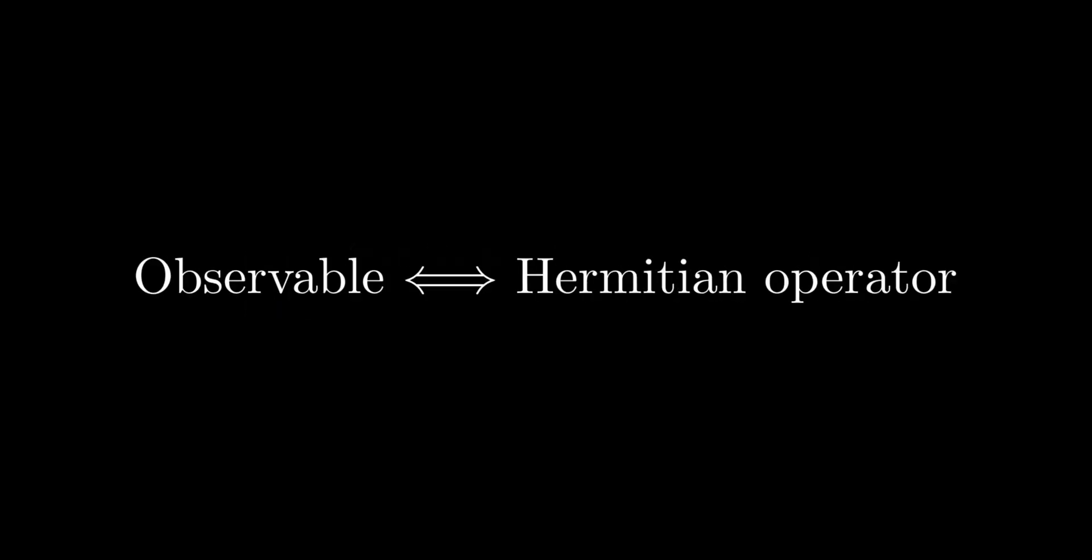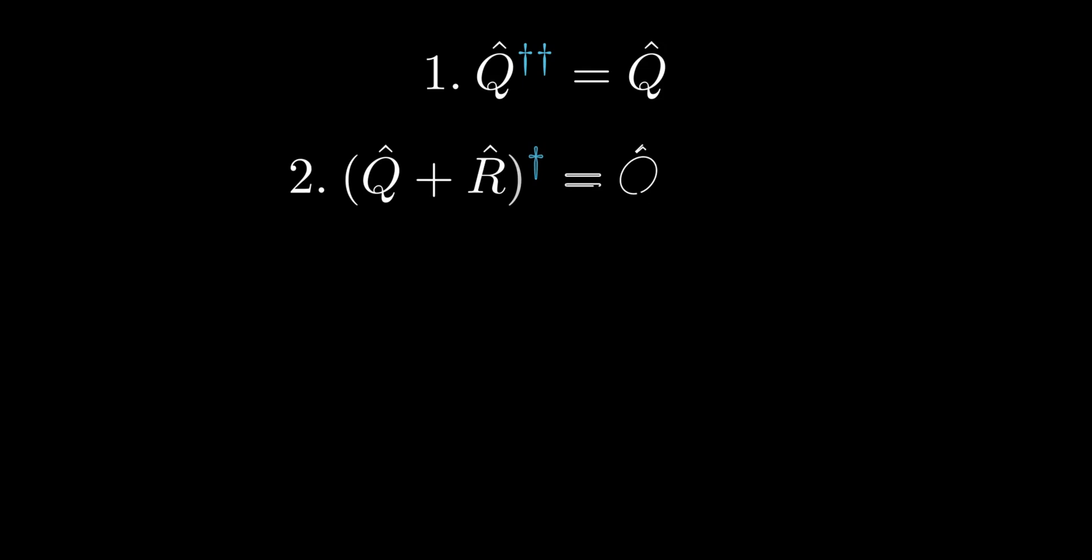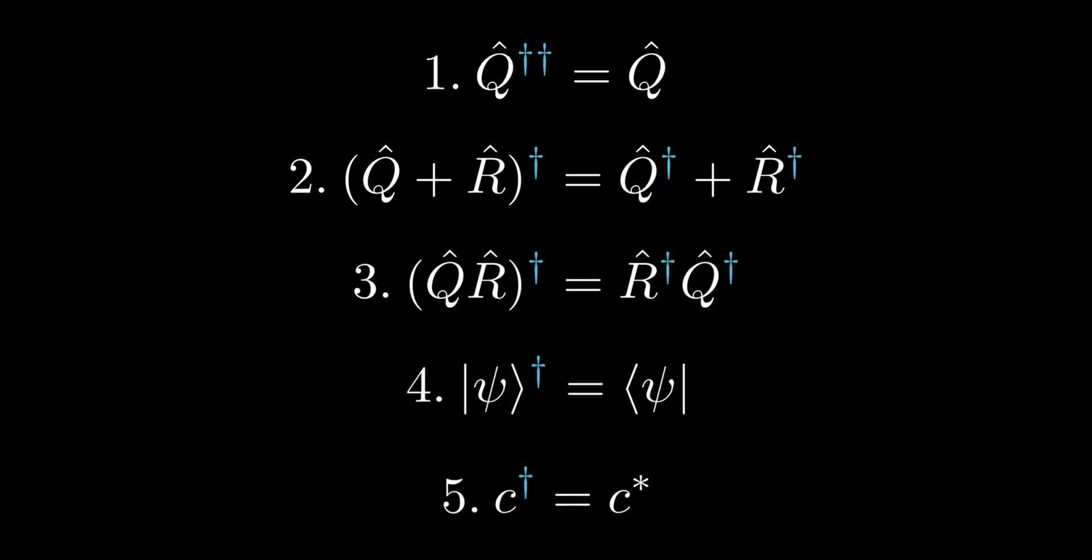We now establish some rules for Hermitian adjoints which will be useful in future. 1. Hermitian adjoint of a Hermitian adjoint is the original operator. 2. The Hermitian adjoint of a sum is the sum of Hermitian adjoints. 3. Hermitian adjoint of a product is the product of Hermitian adjoints in reverse order. Rule 4. The Hermitian adjoint of a ket is bra. 5. Hermitian adjoint of a number is just the complex conjugate of the number.